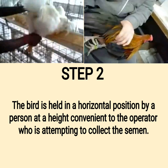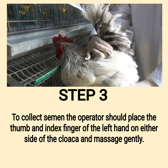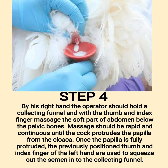Step 1: Restrain the bird for semen collection. Step 2: The bird is held in a horizontal position by a person at a height convenient to the operator who is attempting to collect the semen. Step 3: To collect semen, the operator should place the thumb and index finger of the left hand on either side of the cloaca and massage gently. Step 4: With the right hand, the operator should hold a collecting funnel and with the thumb and index finger massage the soft part of the abdomen below the pelvic bones. Step 5: Massage should be rapid and continuous until the cock protrudes the papilla from the cloaca. Step 6: Once the papilla is fully protruded, the previously positioned thumb and index finger of the left hand are used to squeeze out the semen into the collecting funnel.